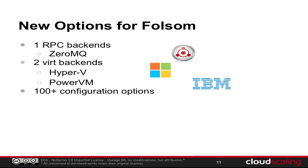There have been a few new backends for Folsom. There's a new ZeroMQ backend, which is a messaging RPC. There are also two new virtualization layers: Hyper-V — which had some infamy after being cut in Essex but is now working great and maintained in Folsom — and PowerVM, put in by IBM. On top of that, 20% of the config options are new, which is a bit overwhelming, but a lot of them are broken down into categories.